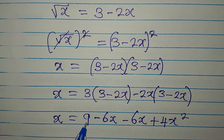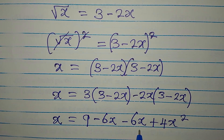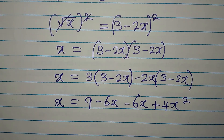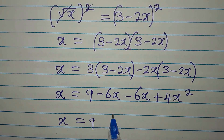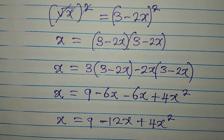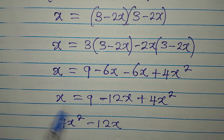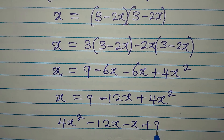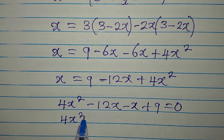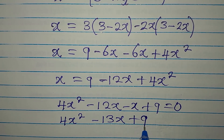Let me go over this again. 3 times 3 is 9. 3 times minus 2x is minus 6x. Then minus 2x times minus 2x gives us plus 4x squared. We'll now rearrange. This is x equals 9 minus 12x plus 4x squared. So I'll write 4x squared minus 12x, then this becomes minus x, and that gives us plus 9 equals 0. And so we have 4x squared minus 13x plus 9 equals 0.